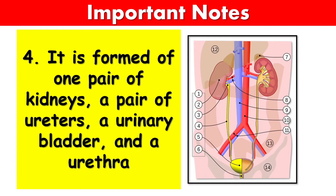The urinary system is formed of one pair of kidneys, a pair of ureters, a urinary bladder, and a urethra.